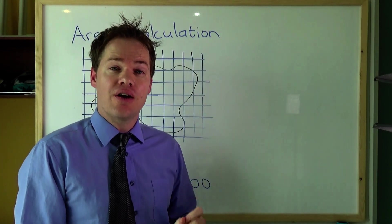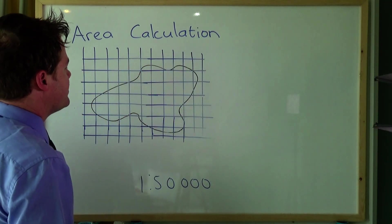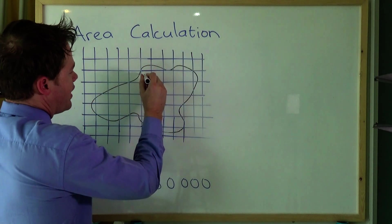What we are going to do first is count all the complete squares and we are going to write the letter A in each square that we count.